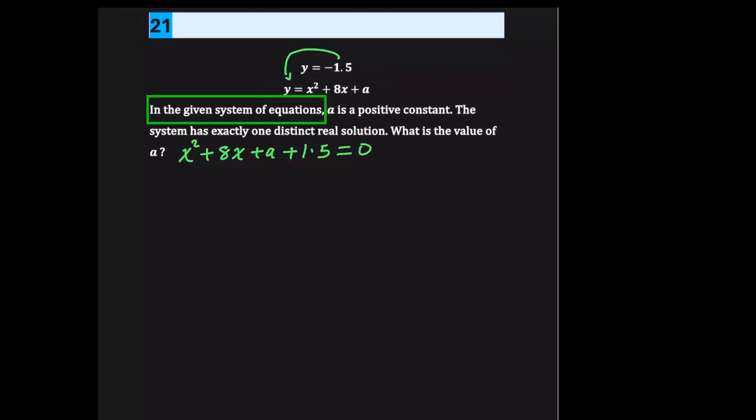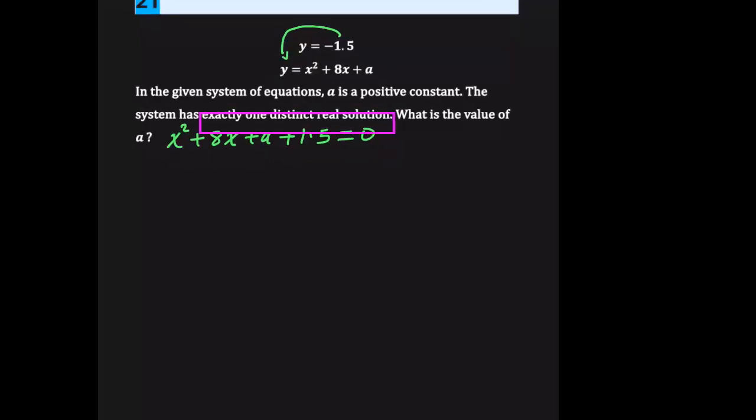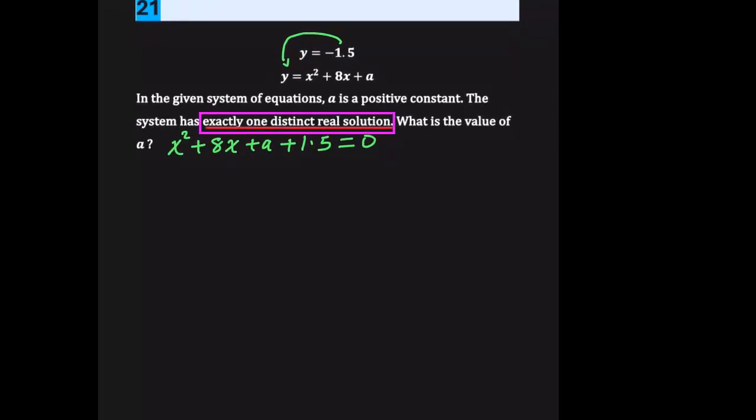In the given system of equations, a is a positive constant. The system has exactly one distinct real solution. So what is the value of a? This term here, exactly one distinct real solution, that's what's called a discriminant.